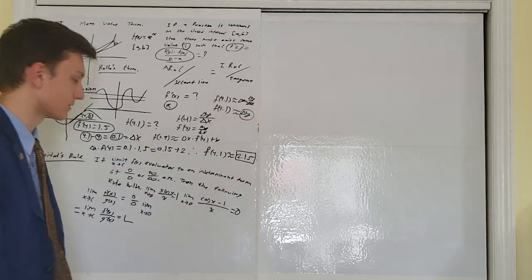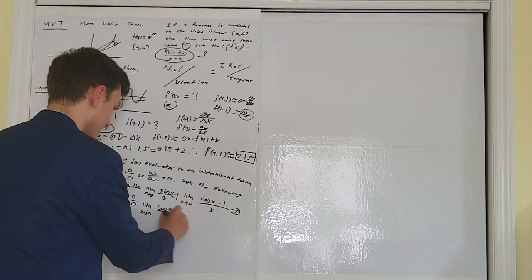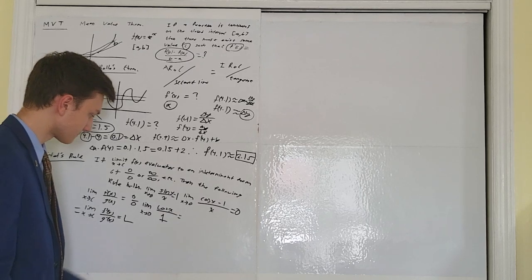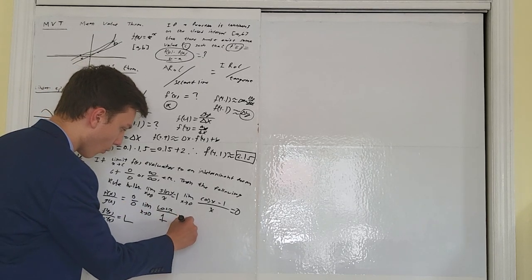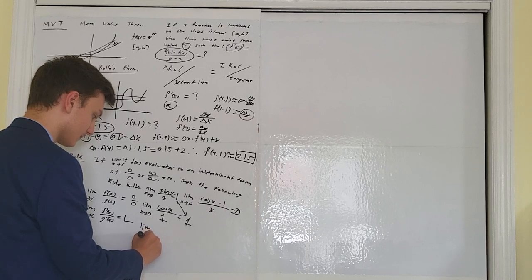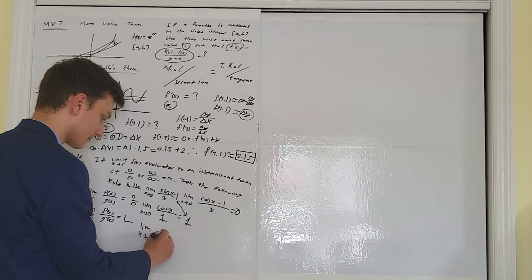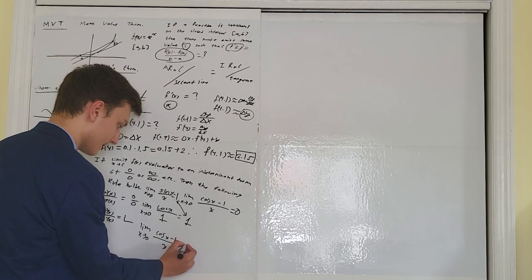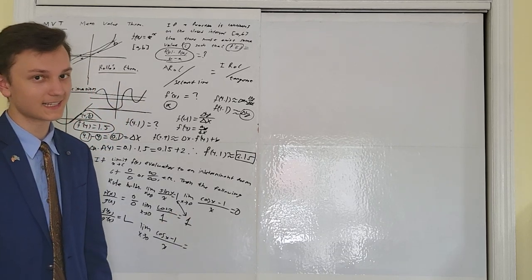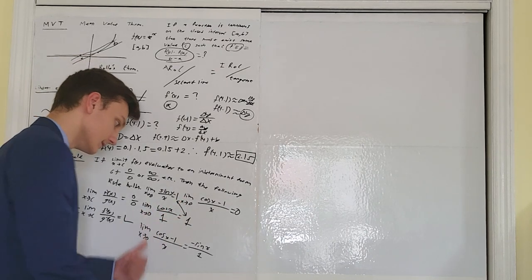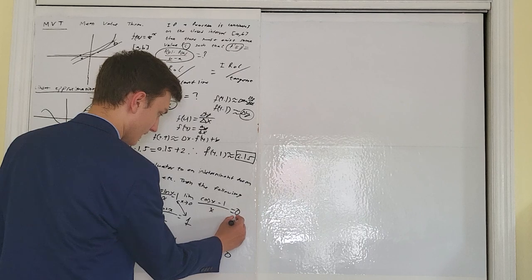Derivative of sine x is cosine x, derivative of x is 1. Using direct substitution: cosine of 0 equals 1 — that confirms the first limit. For the second limit, derivative of cosine x is negative sine, derivative of x is 1. Sine of 0 is 0, so the limit equals 0. That confirms both previously memorized limits.